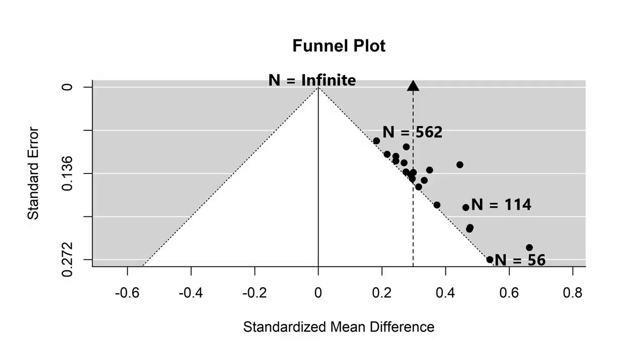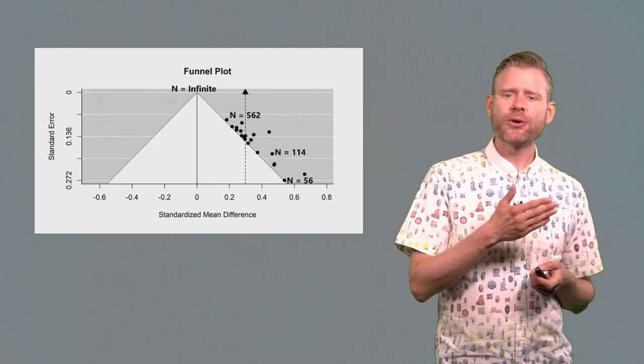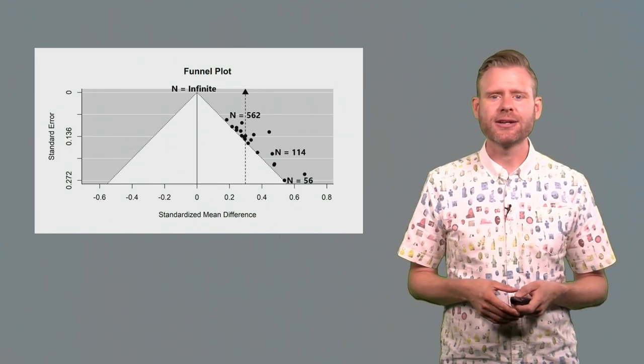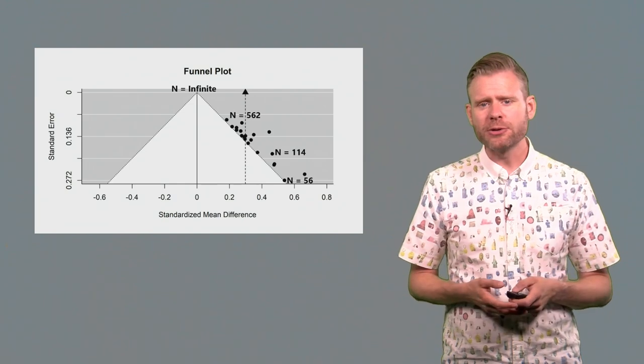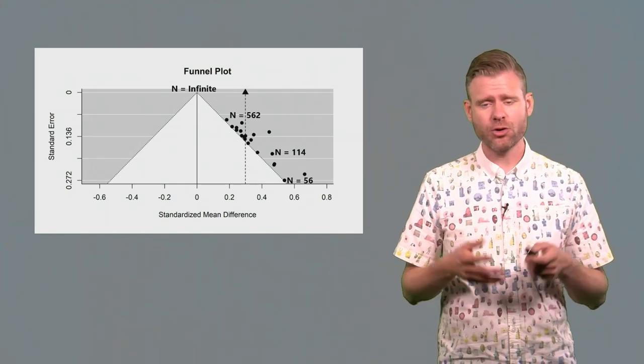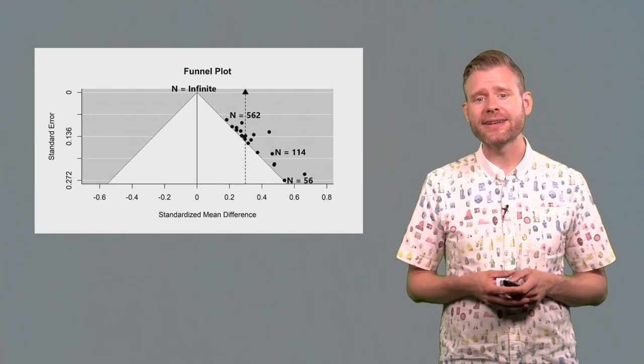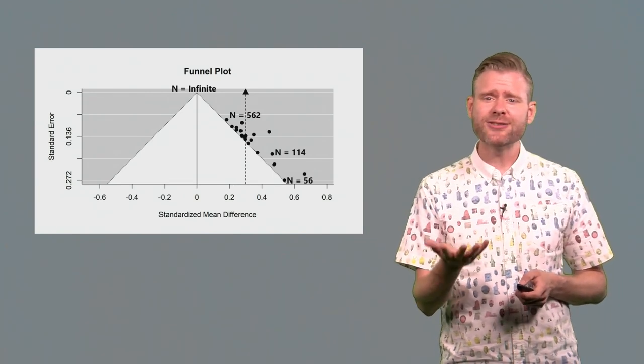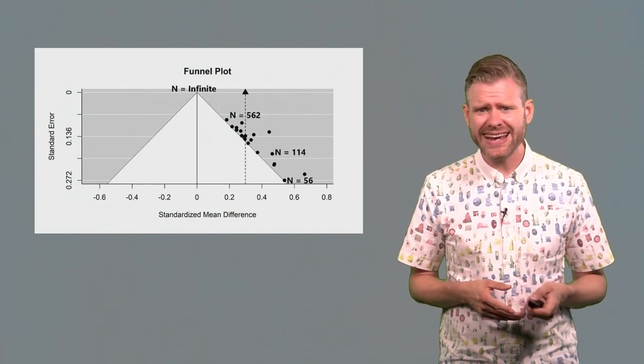And in this picture, we see an incredibly biased meta-analysis, because every individual study is actually statistically significant, or it's falling outside of this white triangle. So in a way, a funnel plot, as long as we have a large enough number of observations or studies included in the meta-analysis, is a useful way to at least visually try to detect bias.